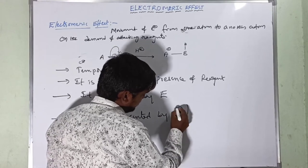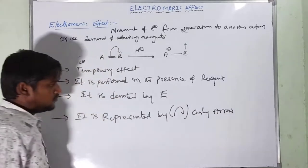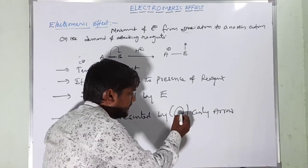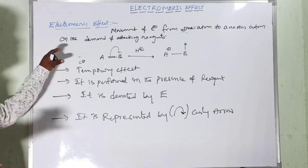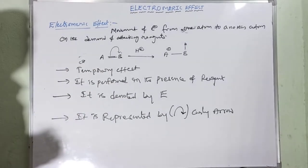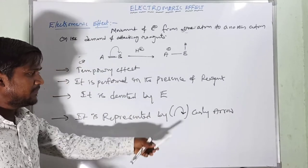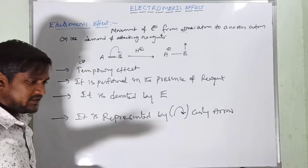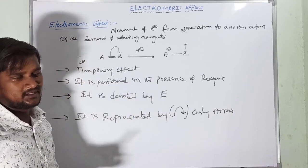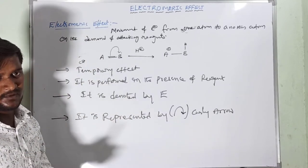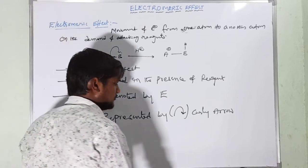The movement of electrons is represented by curly arrows. This is the electromeric effect — it is a temporary effect, represented by E. Similar to the inductive effect, mesomeric effect, and hyperconjugation effect, the electromeric effect also has two types: the +E effect and the −E effect.